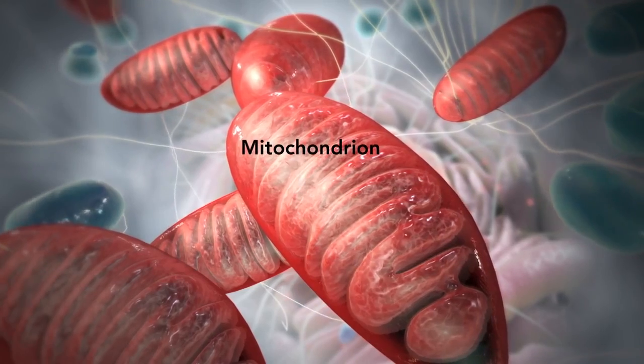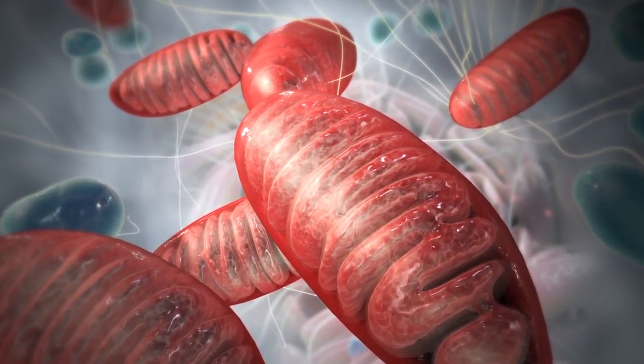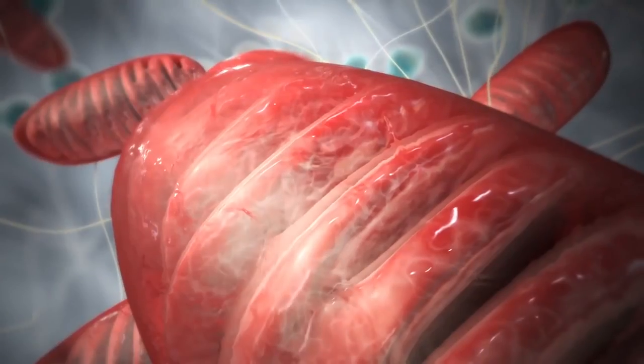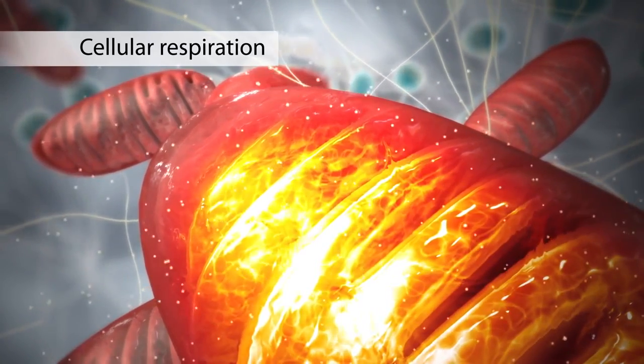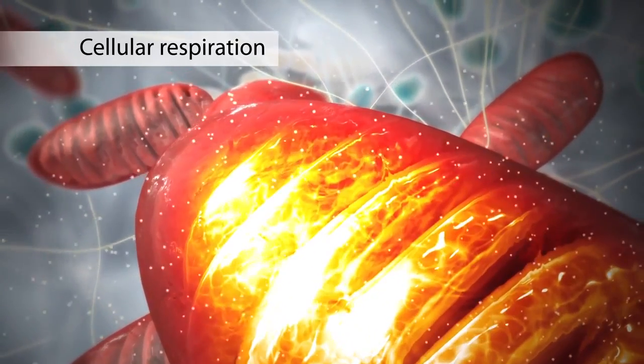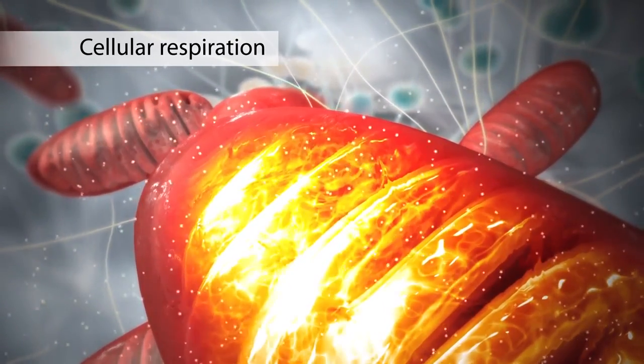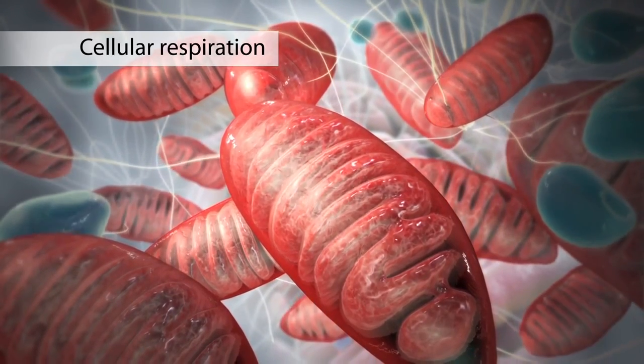The mitochondrion is an organelle that is the powerhouse for both animal and plant cells. During a process called cellular respiration, the mitochondria make ATP molecules that provide the energy for all of the cell's activities. Cells that need more energy have more mitochondria.